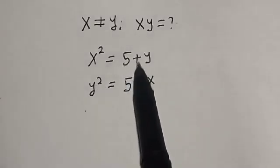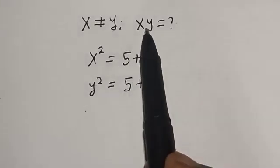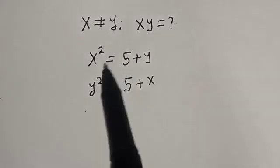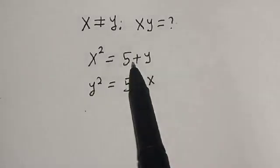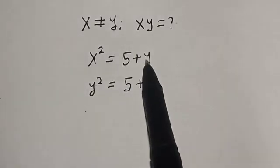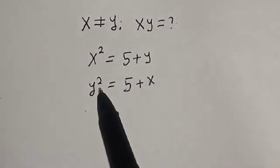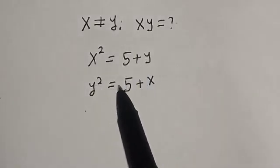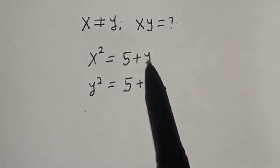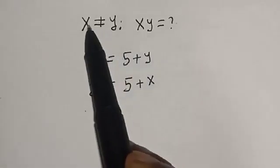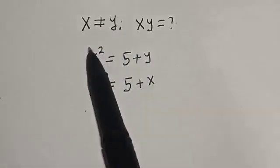Hello, welcome to Magist. In this class, I want to find the value of x and y from this equation: x squared is equal to 5 plus y, then y squared is equal to 5 plus x, provided x is not equal to y.